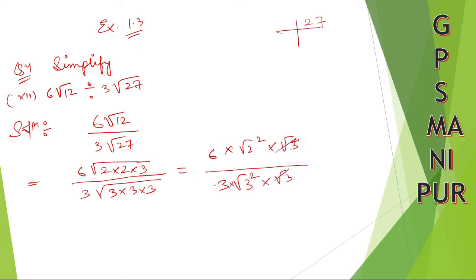So √3, √3 cancel. And 3, 2 is 6. These 2 cancel. Now 2 square and root cancel. So 2 times 2 is 4 divided by 3. So 4/3, this is your answer.